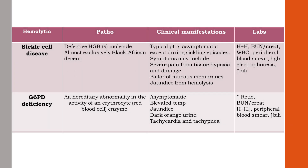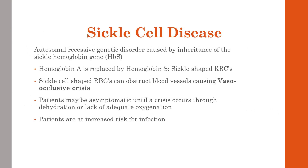Sickle cell disease — also called sickle cell anemia — is an autosomal recessive genetic disorder caused by inheritance of the sickle hemoglobin gene (HbS). This molecule causes the erythrocyte to change shape from a round circle to a half-moon when exposed to low oxygen tension. These defective erythrocytes can adhere to blood vessel walls, accumulate, and clog areas causing decreased blood flow. When blood flow is severely reduced, it can cause ischemia or infarction of tissue with pain, swelling, and fever — known as a vaso-occlusive crisis.